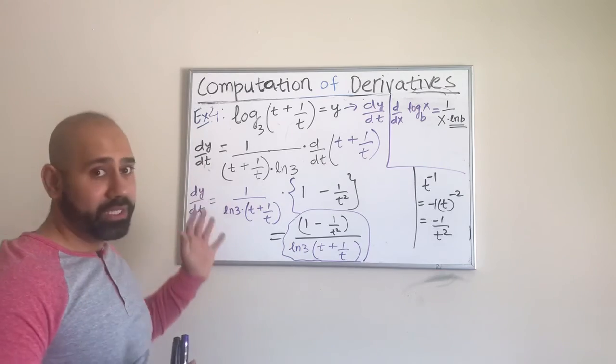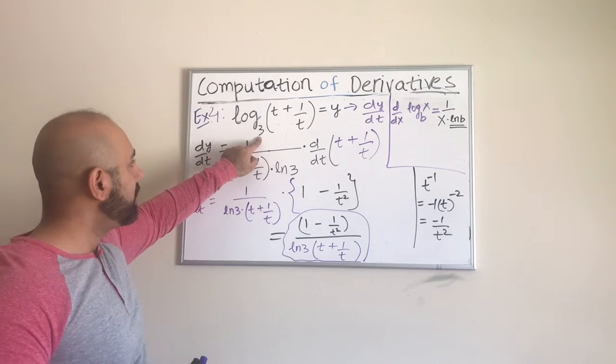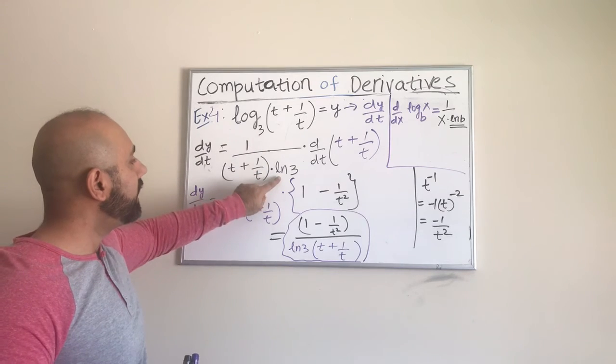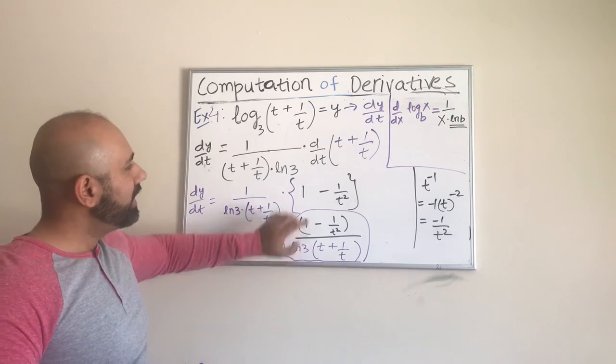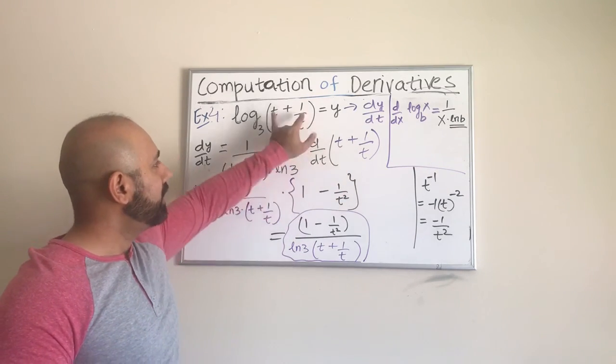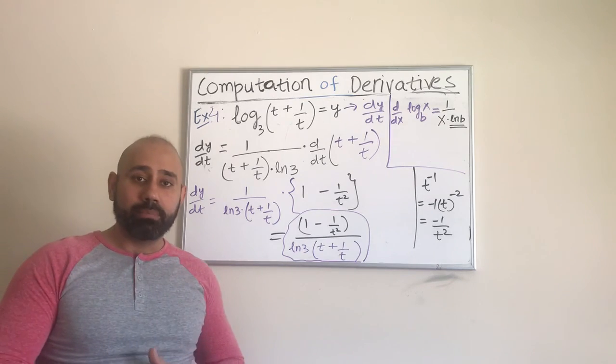So this was slightly different than any of the previous examples because it had a different base. It has just base 3. So we had to divide by the ln of 3. So we just kept writing it and it is part of the final answer. And then we just have to use the chain rule on the inner piece. Okay, this is example 4. I will see you next time with another example. Till then, take care.